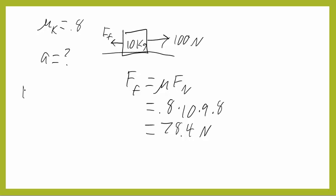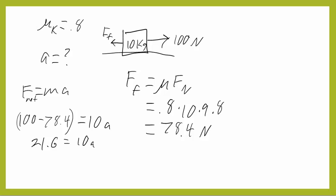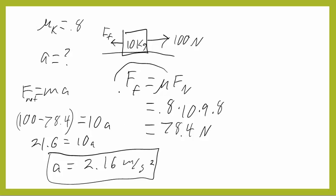Then we can apply F equals ma to find, and this is net force, right, to find the acceleration. So the net force is going to be 100 minus 78.4, since they're in opposite directions. Set that equal to the mass, which is 10 times the acceleration. So we'll get 21.6 equals 10a, and a equals 2.16 meters per second squared. There you have it, folks, making things just a little bit more complicated by having you calculate friction rather than just giving it to you. Over and out. See you next time.